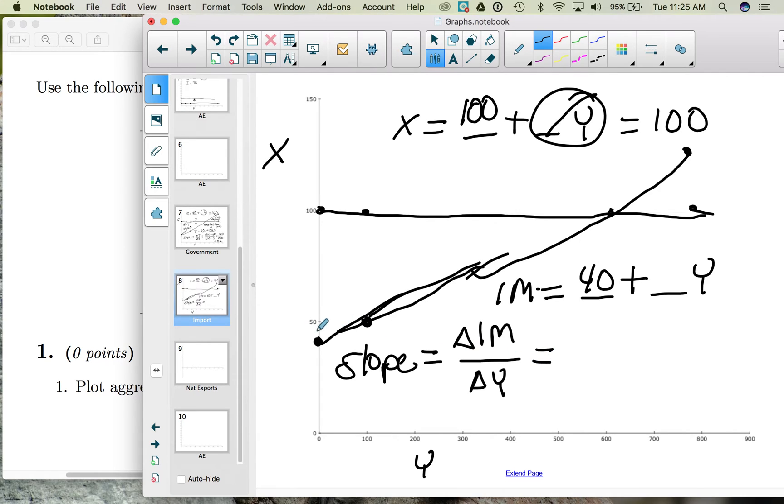So our imports go from $40 to $120. So $120 minus $40 divided by, and our income goes from $0 to $800. So $800 minus $0. And so that difference then is $80 divided by $800. And so we have $0.1.